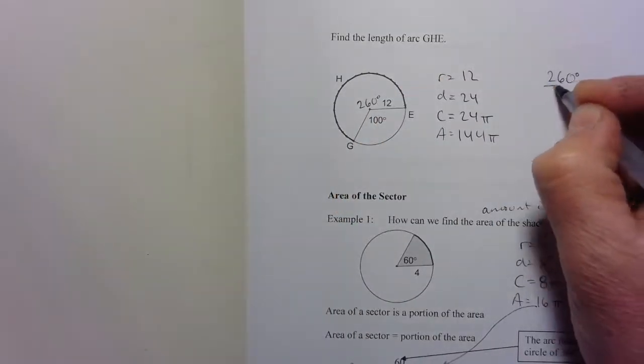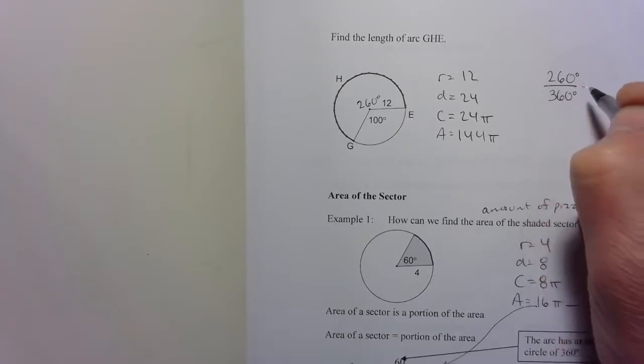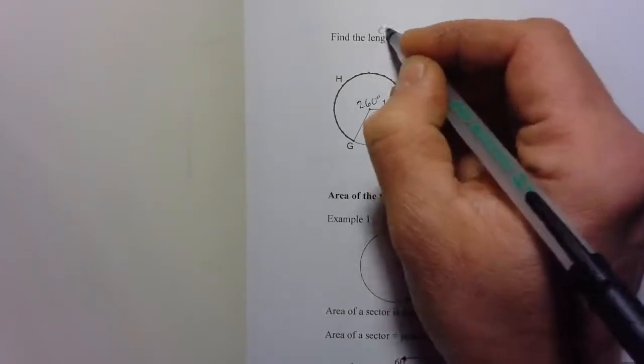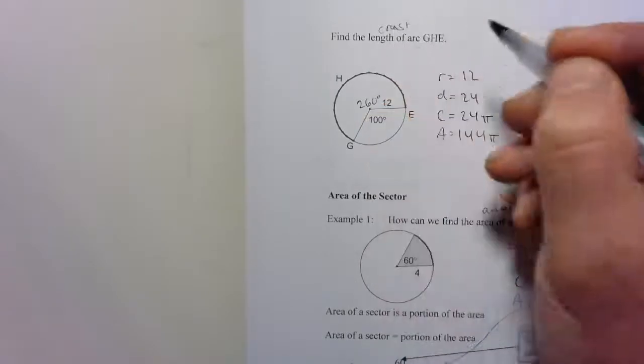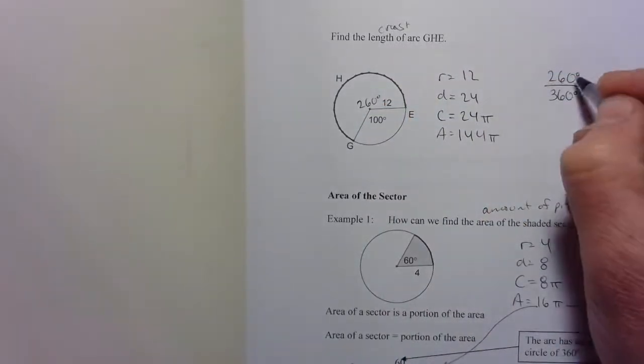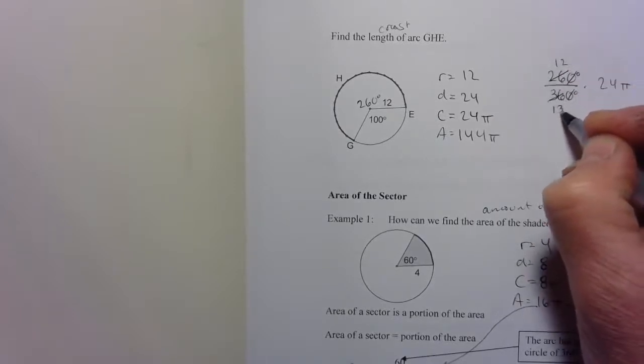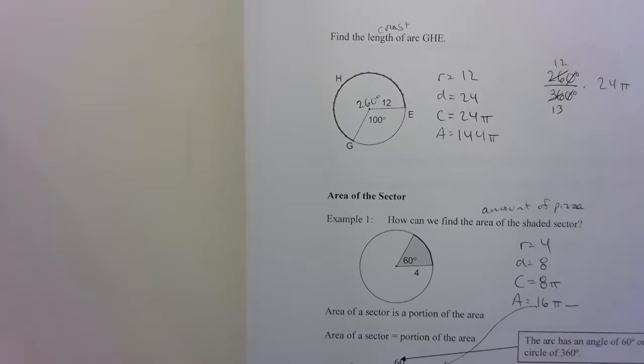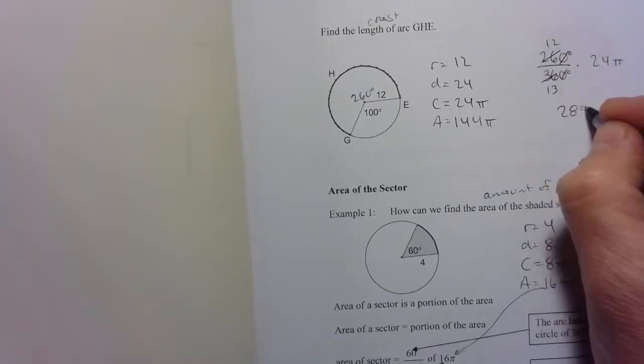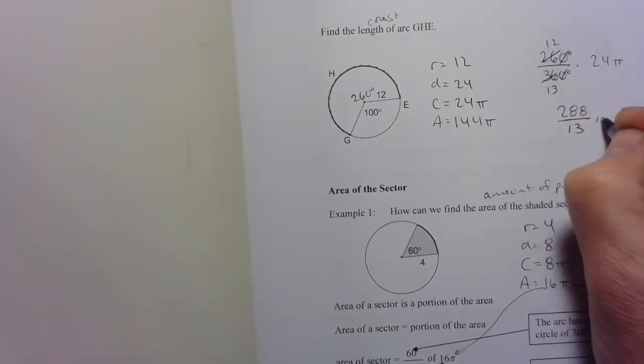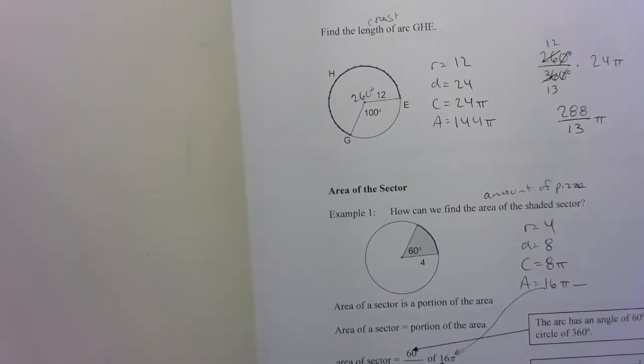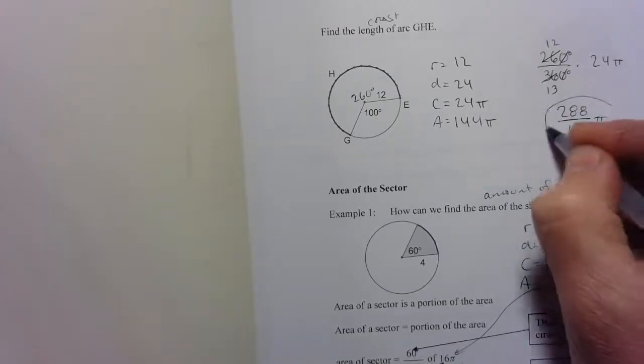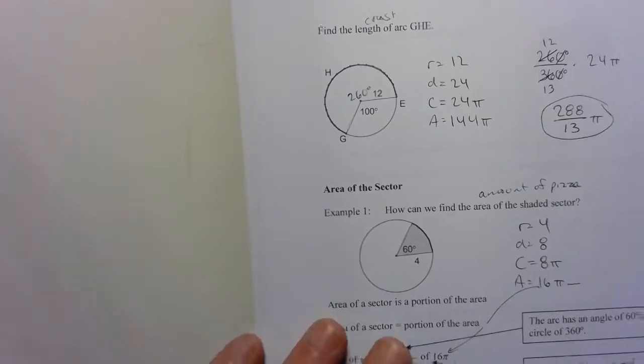It's going to be 260 degrees over 360. And we're doing the length, so that's again the crust. The crust is 24 pi. Reduce this. They can both be divided by 2. 12 times 24 is 288 over 13. 288 cannot be divided by 13. I'm just going to double-check. No, it's a decimal. We're just going to leave it that way. So there's our answer.